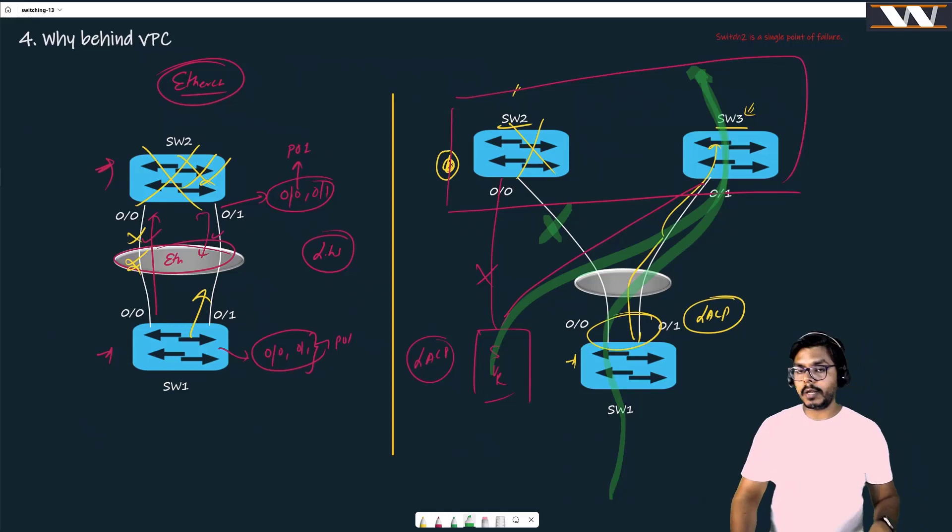If this link goes down from the switch, the traffic can go like this. I need something like this. I understand that if you draw, if you try to design this in your mind, it is going to be a problem. There are going to be so many problems.